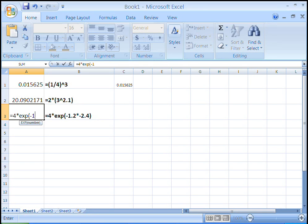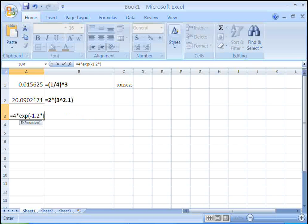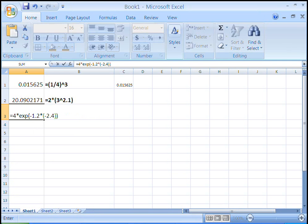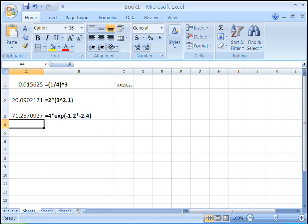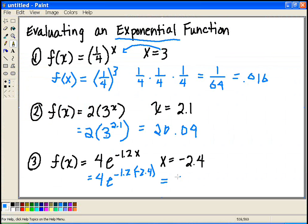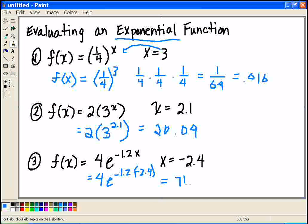In this case, we want a minus 1.2 times a minus 2.4. And it returns to me a value of 71.26. So that would be the approximate value for this, 71.26.